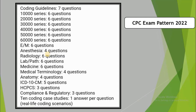Here I am going to show you the structure and number of questions in each chapter. Coding guidelines: 7 questions. Series 1 through 6 (the surgery part) each have 6 questions, totaling 36 questions — surgery is the major part. E&M: 6 questions. Anesthesia: 4 questions. Radiology: 6 questions. Lab/Pathology: 6 questions. Medicine: 6 questions. Medical terminology: 4 questions. Anatomy: 4 questions. ICD-10-CM: 5 questions.